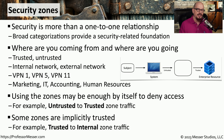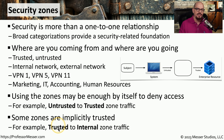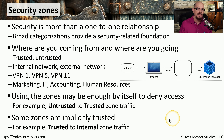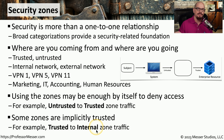We can also use these zones to create implicit trust. For example, if someone is in our corporate offices they might be in a trusted zone, and if they're accessing a database server in the data center — which exists in the internal zone — we can create a policy that says communication from the trusted zone to the internal zone is implicitly trusted.